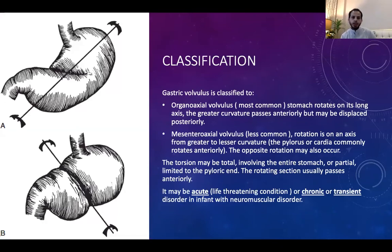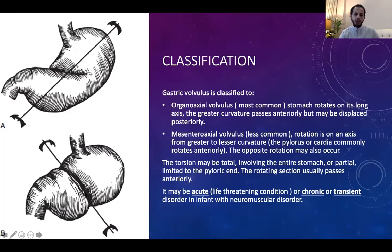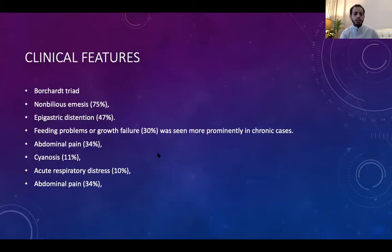Gastric volvulus is classified as organoaxial — where the stomach volvulates over its longitudinal axis, with the body moving anteriorly — or mesenteroaxial — where the stomach volvulates around its transverse axis. Torsion can be acute (life-threatening, requiring urgent intervention) or chronic/transient, especially in infants with neuromuscular disorders. Clinical features include failure to vomit despite attempts, inability to insert an NG tube, upper abdominal distension, feeding problems with growth failure, abdominal pain, cyanosis, and respiratory symptoms. The Borchardt triad should be recognized.